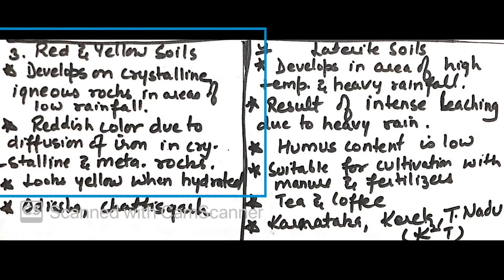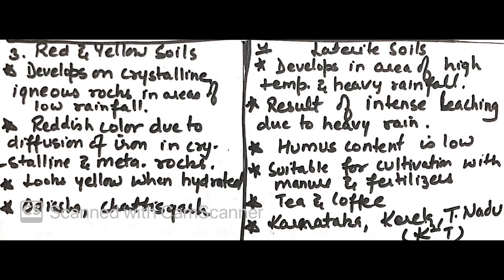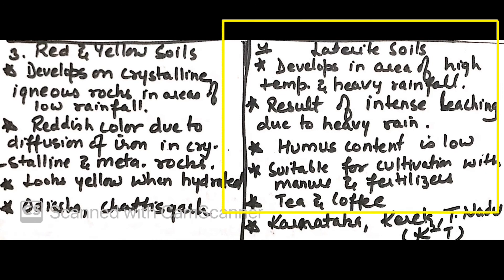Next is red and yellow soils. These soils develop on crystalline igneous rocks in areas of low rainfall. They have red color due to diffusion of iron in crystalline and metamorphic rocks. They look yellow when hydrated. Areas: Odisha and Chhattisgarh.